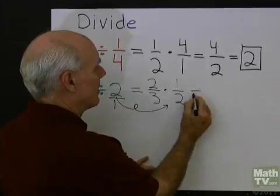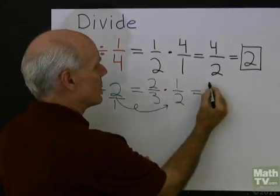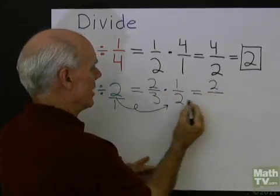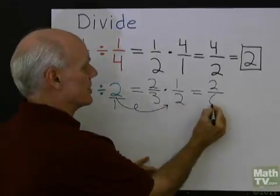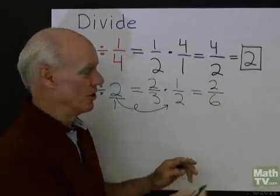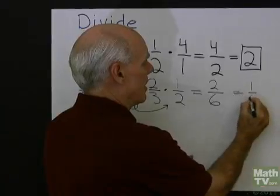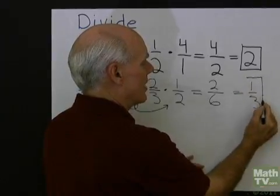Now when I multiply, in the numerator, 2 times 1 is 2, and then in the denominator, 3 times 2 is 6. I can reduce to lowest terms now and get just 1 third for my answer.